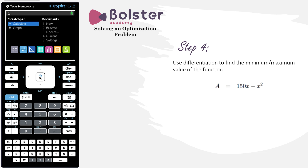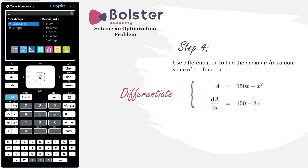We have our expression for area: 150x - x². Now we need to differentiate this. Differentiating 150x gives 150, and differentiating -x² using the power rule — multiply by the power and drop the power by 1 — gives -2x.